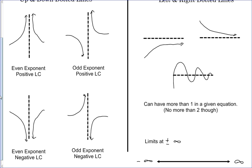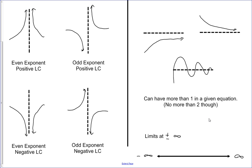Now let's look at horizontal asymptotes. Your graph can approach a horizontal asymptote three ways: it can come up from the bottom, it can come down from the top, or it can even cross it — kind of like a bungee jumper. As they fall they'll stretch past the length of the bungee cord, bounce back, and eventually settle out to the length of the cord. You can have more than one horizontal asymptote but no more than two — zero, one, or two. You determine horizontal asymptotes and their direction from the limits as x approaches positive or negative infinity.